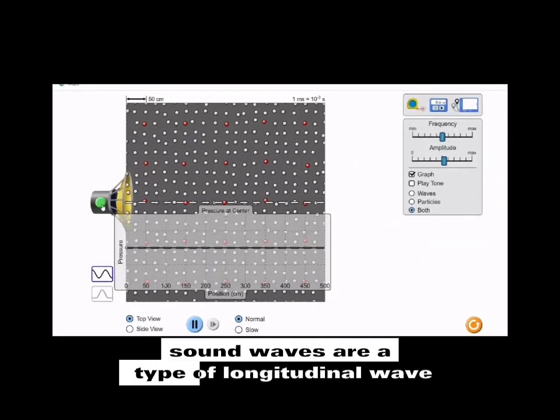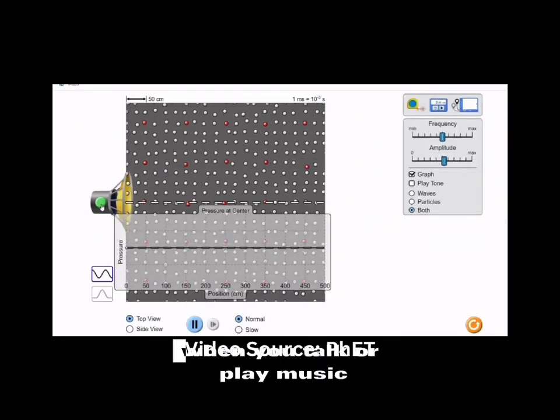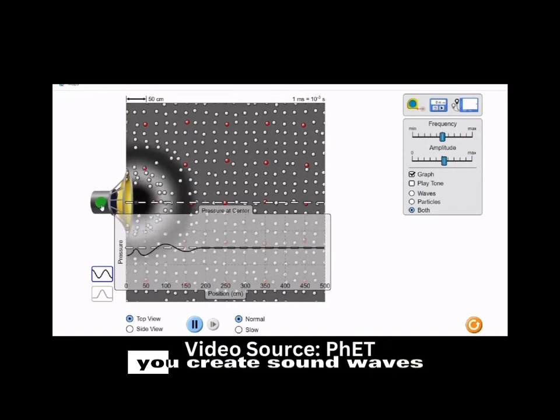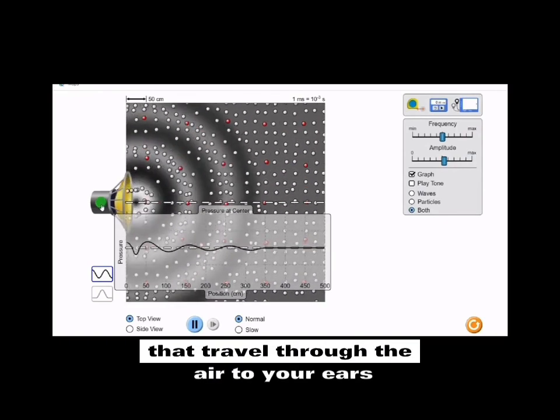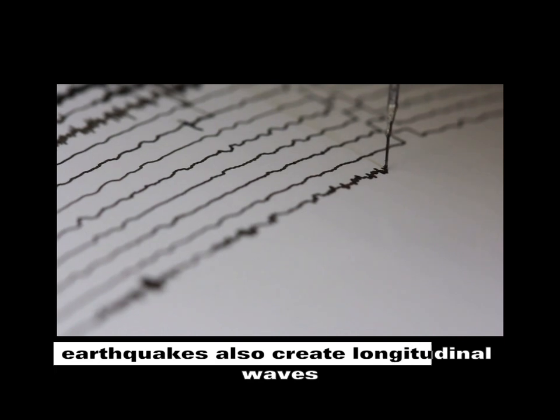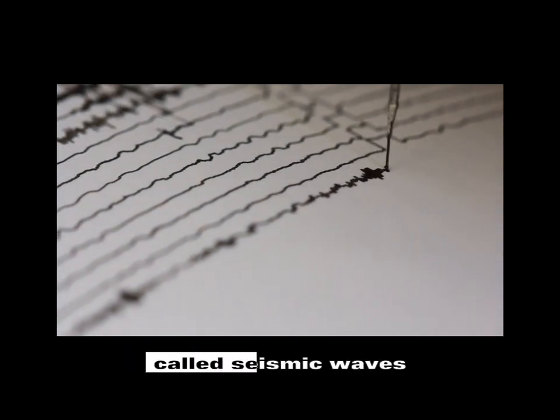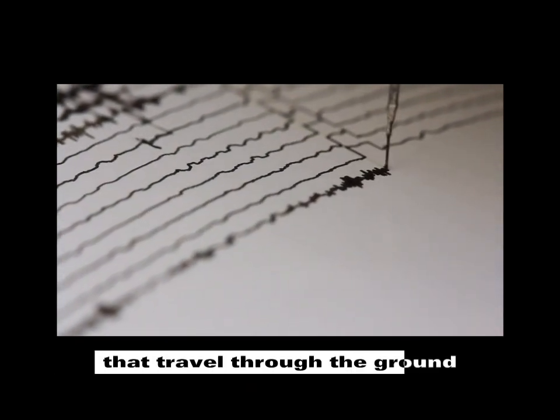Sound waves are a type of longitudinal wave. When you talk or play music, you create sound waves that travel through the air to your ears. Earthquakes also create longitudinal waves, called seismic waves, that travel through the ground.